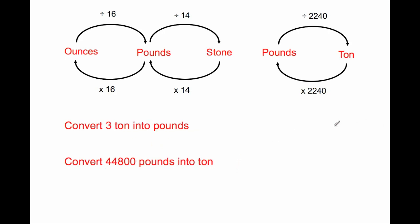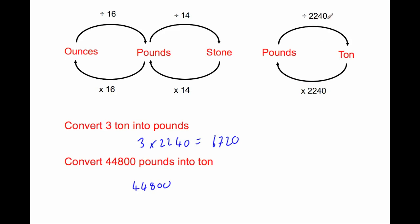Convert 3 tons into pounds. To go from tons into pounds, we times by 2,240. So 3 times 2,240 is 6,720 pounds. Next, convert 44,800 pounds into tons. We take 44,800 and, because in each ton there are 2,240 pounds, we divide by 2,240. We get the answer of 20. So the answer is 20 tons.